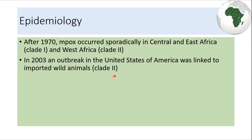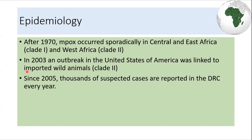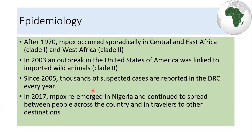In 2003, there was an outbreak in the United States linked to imported wild animals. Since 2005, thousands of cases are reported in Congo every year. In 2017, Mpox re-emerged in Nigeria and continued to spread among people across the country and in travelers to other destinations.